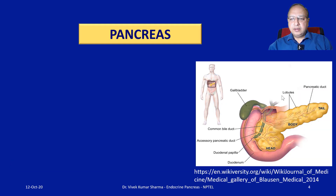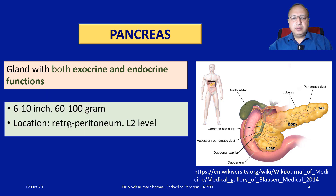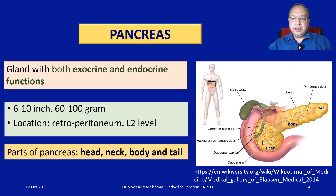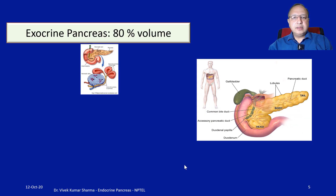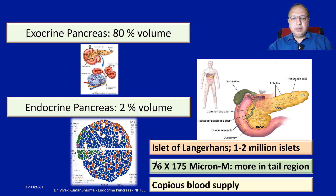Coming to the introduction to the pancreas: it is a gland with both exocrine and endocrine function. It is roughly 6 to 10 inches and 60 to 100 grams, located retroperitoneally at the level of L2. Its parts include the head, neck, body, and tail. The exocrine pancreas is roughly 80% by volume, while the endocrine pancreas is roughly 2% by volume and consists of the islets of Langerhans. We have roughly 1 to 2 million islets, sized roughly 76 to 175 microns, more located in the tail region, with a copious blood supply.